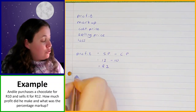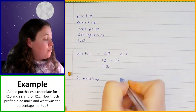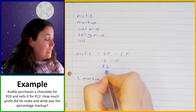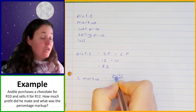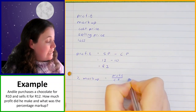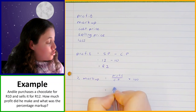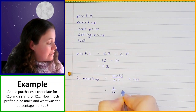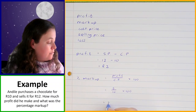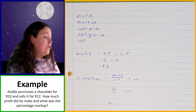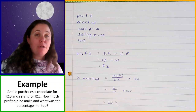Now we're going to work out his percentage markup. To work out the percentage markup, we're going to take the amount that he made as profit divided by the amount that it cost him in the first place — the cost price — and times that by 100 to get a percentage. So that is going to be 2 divided by 10 times 100, and that gives us a percentage of 20%. So that means that he marked the price of the chocolate up by 20% from what he paid for it to get the amount that he was going to sell it for.